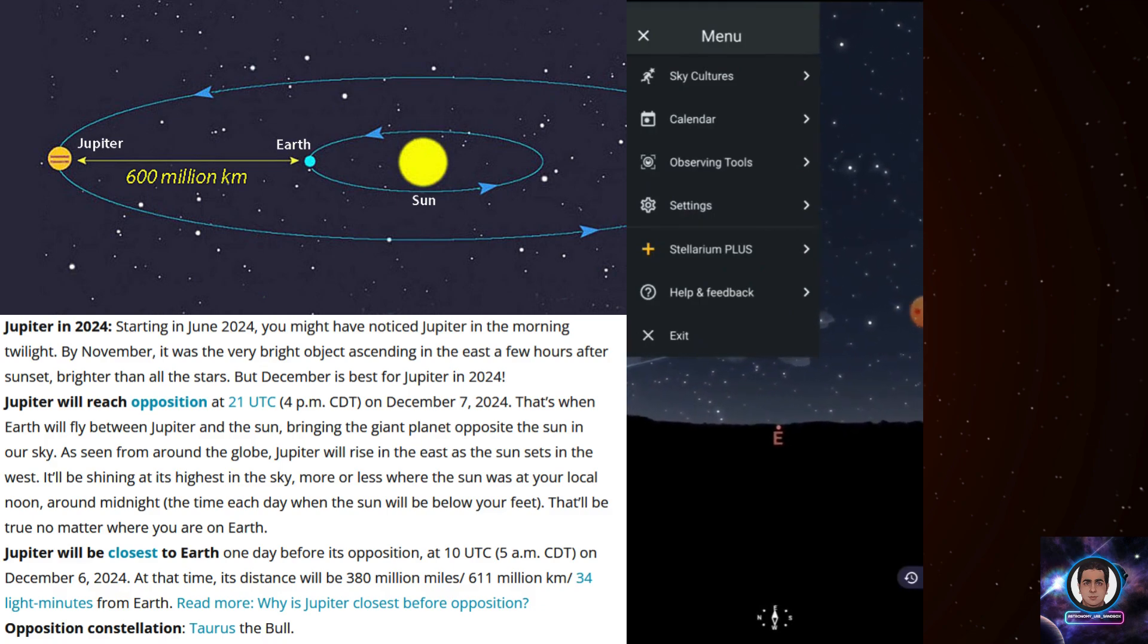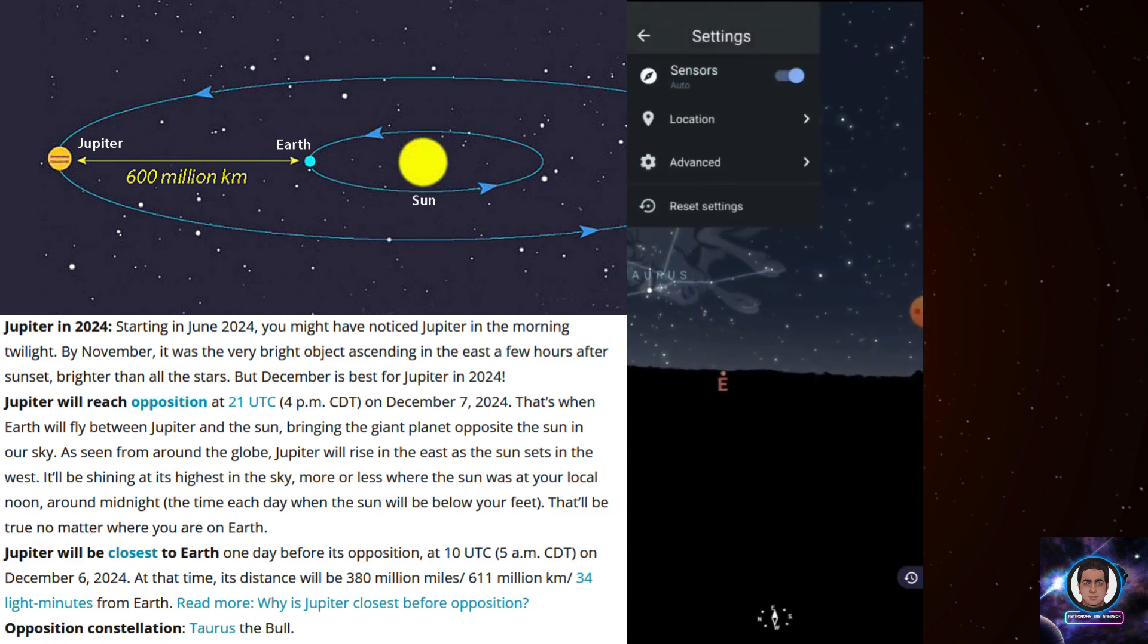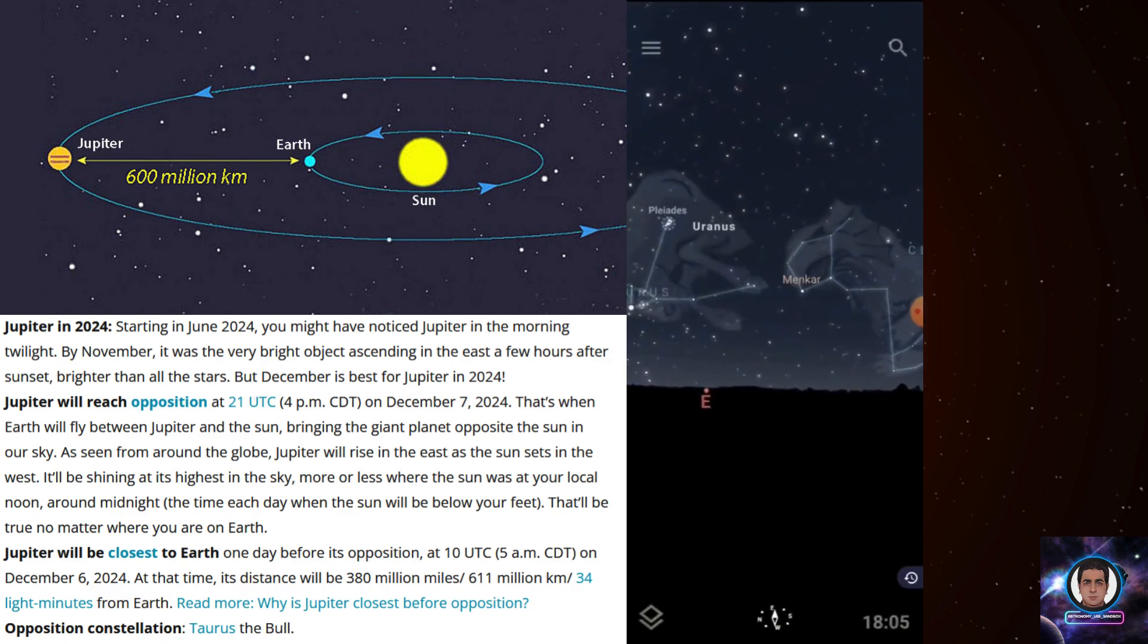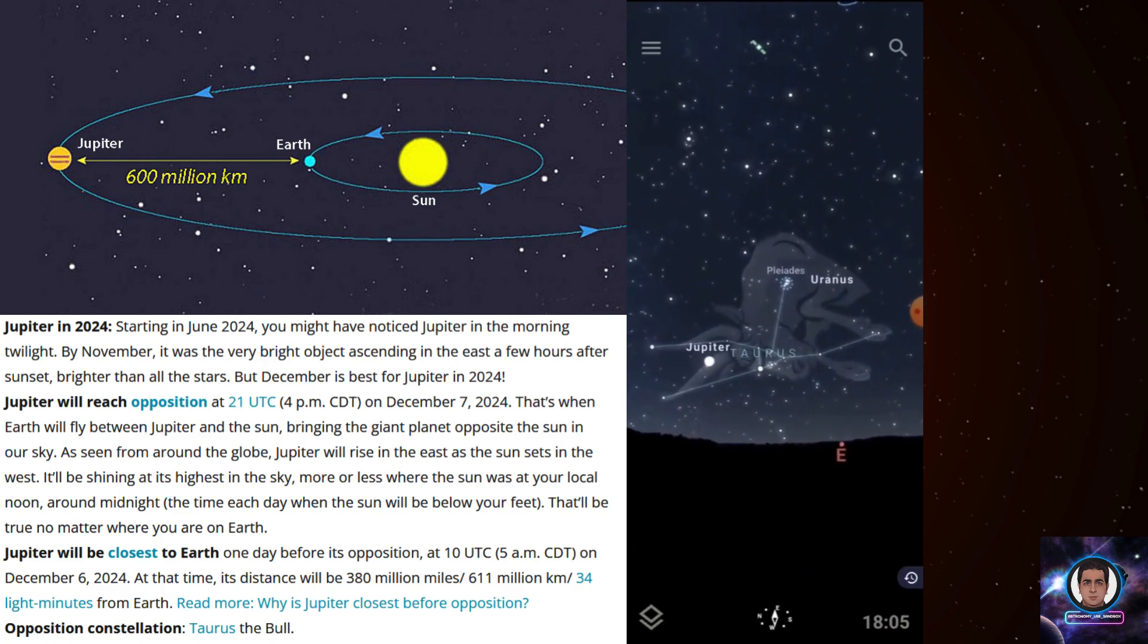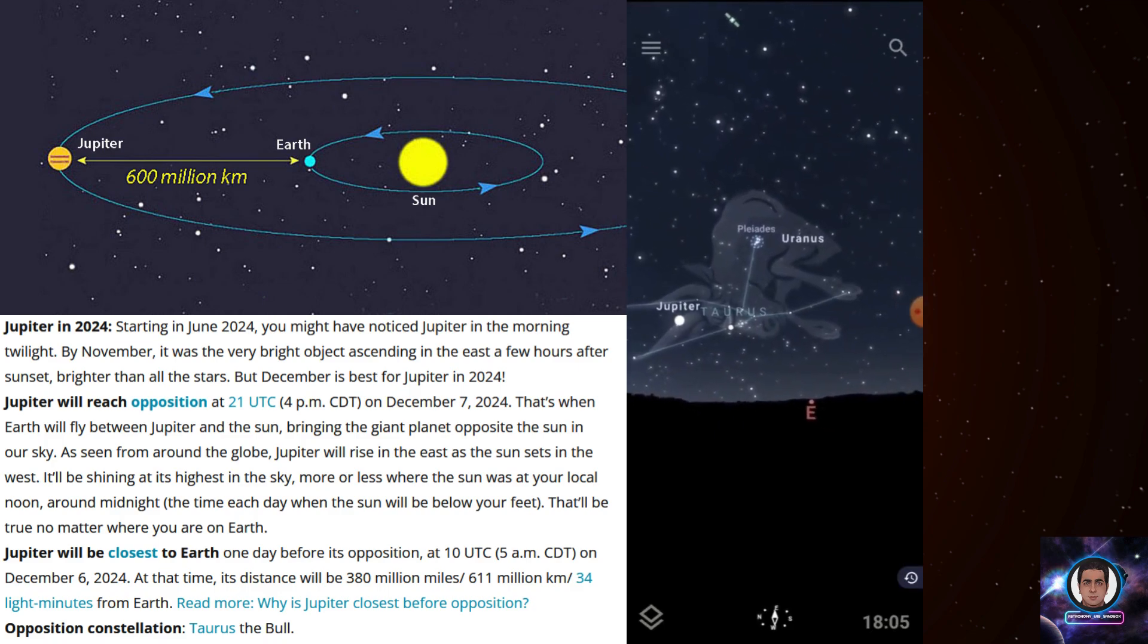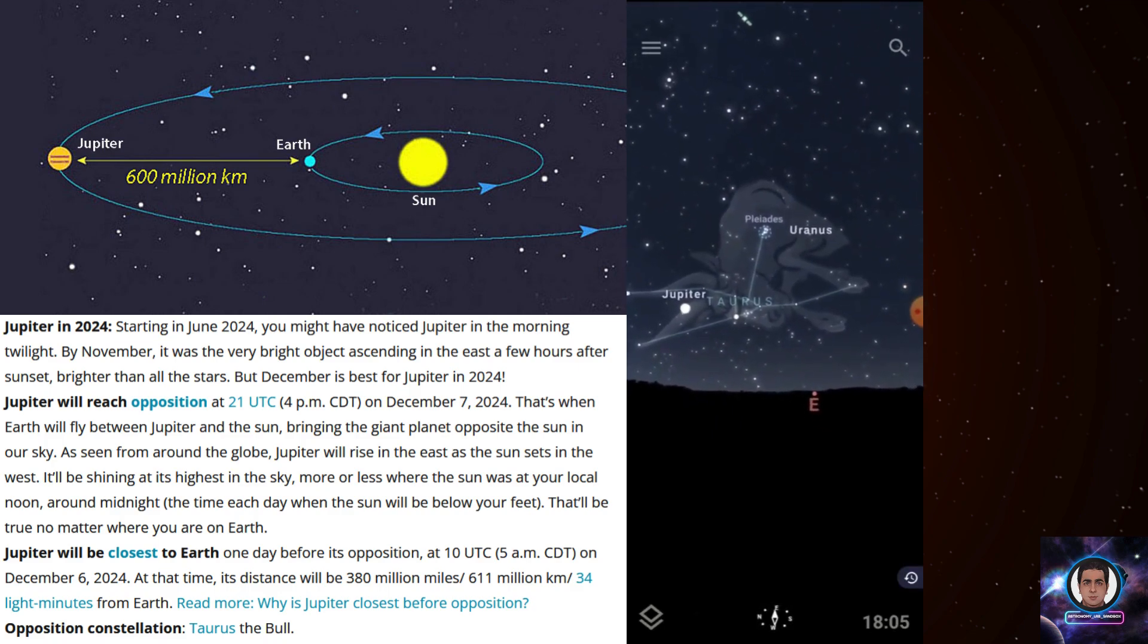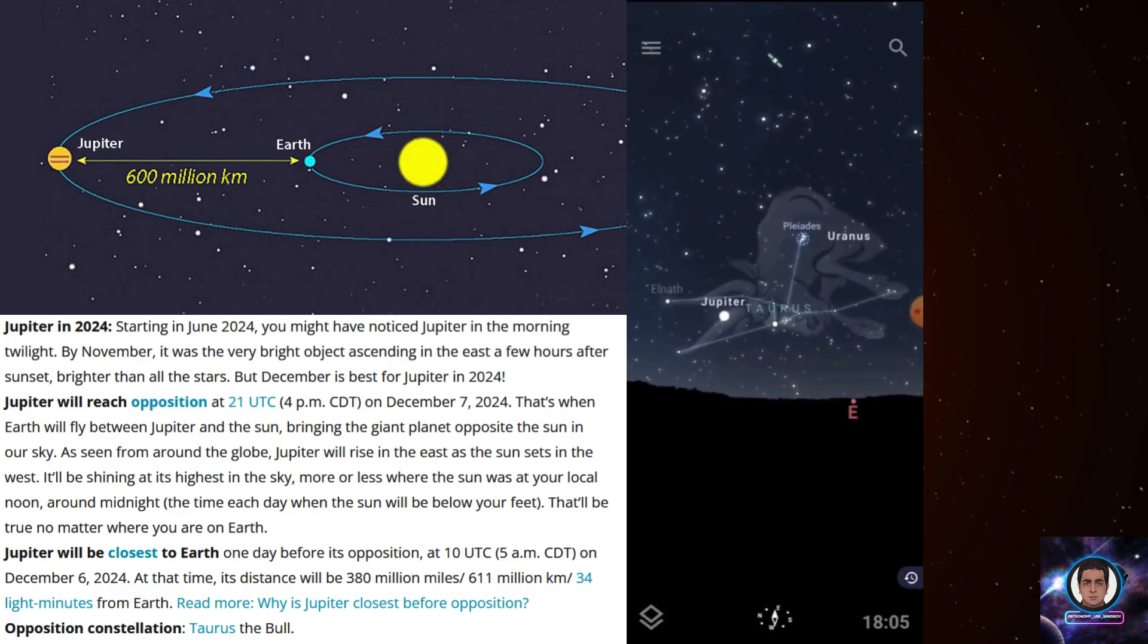When you want to adjust your location, just go to settings and in the location bar I'm using auto location, but you can set it whenever, wherever you want. So it will find you by your GPS. My east side is actually Jupiter and Uranus, so you can even set the time from here.